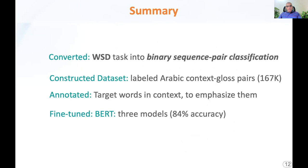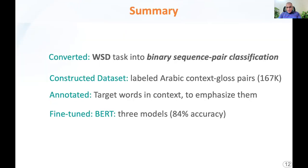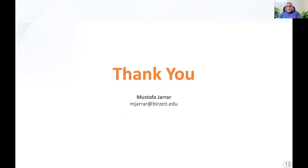To sum up, we showed how to tackle the WSD task as a binary sequence pair classification task. We constructed a dataset of 160,000 pairs labeled as true and false, and we annotated the target words, which we consider a relatively large dataset. We fine-tuned three models and achieved 84% accuracy. This is the end of my talk — thank you very much for listening, and I am happy to take questions.